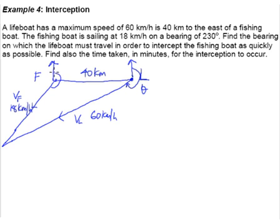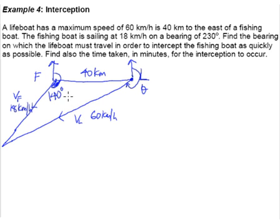We know the bearing the fishing boat is moving is 230 degrees. If this is 230 degrees, then the angle between the north line at the fishing boat and the east–west line has to be 90 degrees, because this is due north and this is due east. Therefore 230 degrees minus 90 degrees gives us 140 degrees as the interior angle of our triangle.